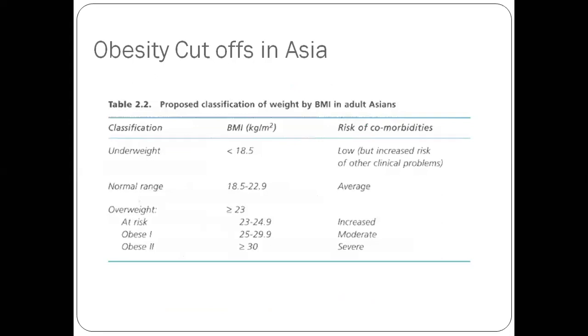One thing regarding obesity. Obesity cutoffs in Asia are not the same as you would have read in your textbooks. Worldwide, BMI more than 25 is overweight and more than 30 is obese. But in Asians, they are at higher risk of metabolic complications because of obesity. Their cutoff for overweight is 23, and anything more than 25 is considered obese. When we are talking about obese in Indian scenario, this is the cutoffs that you should use.